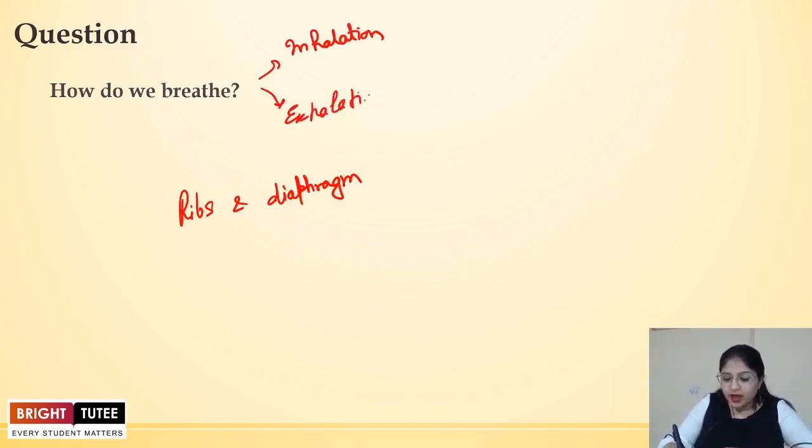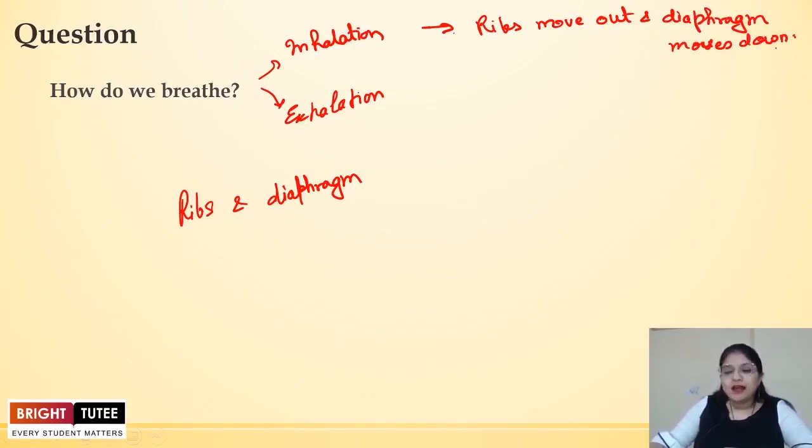What happens in inhalation is that the ribs move out and diaphragm moves downwards. This happens so that the space in the chest cavity increases. When the space in the chest cavity increases, what happens is that the air that is present around us rushes in to our lungs through the nostrils.